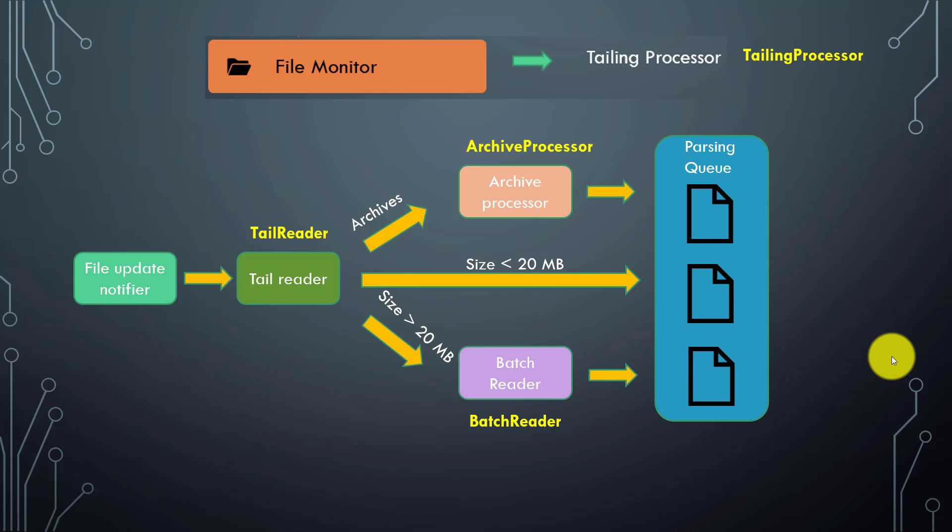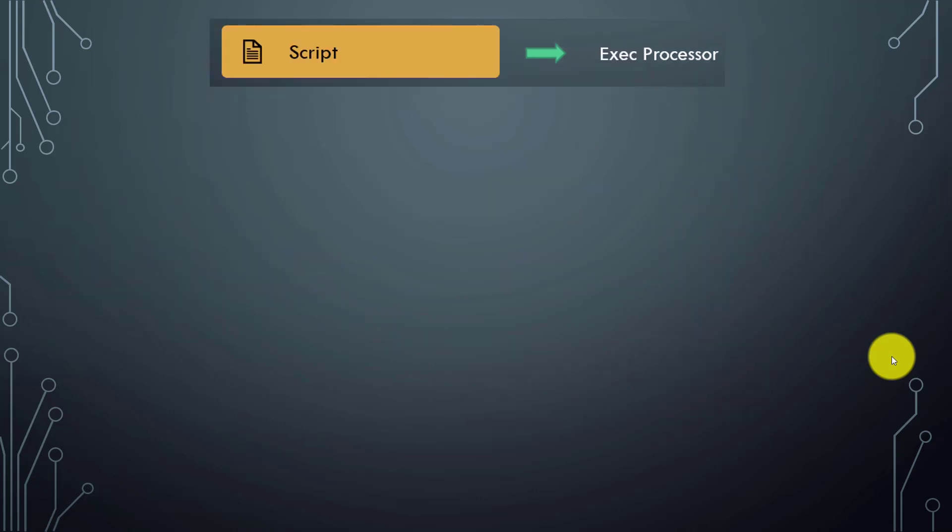In the previous video we saw how different internal log files Splunk generates. We started with the splunkd log and saw how to view file monitoring logs in splunkd. Now in this video we will see how to analyze the logs for scripted input and modular input.